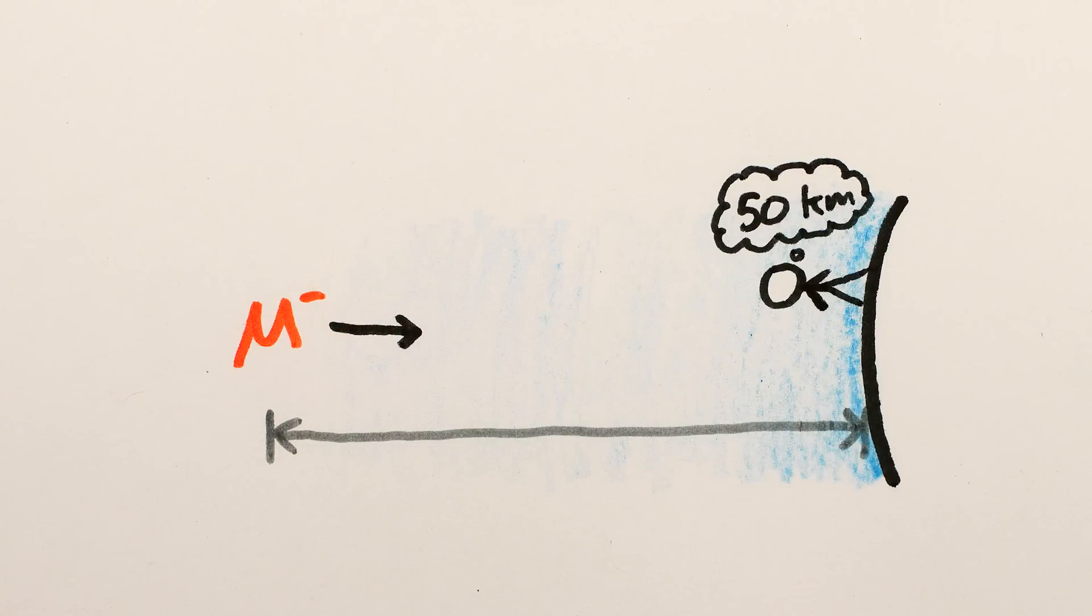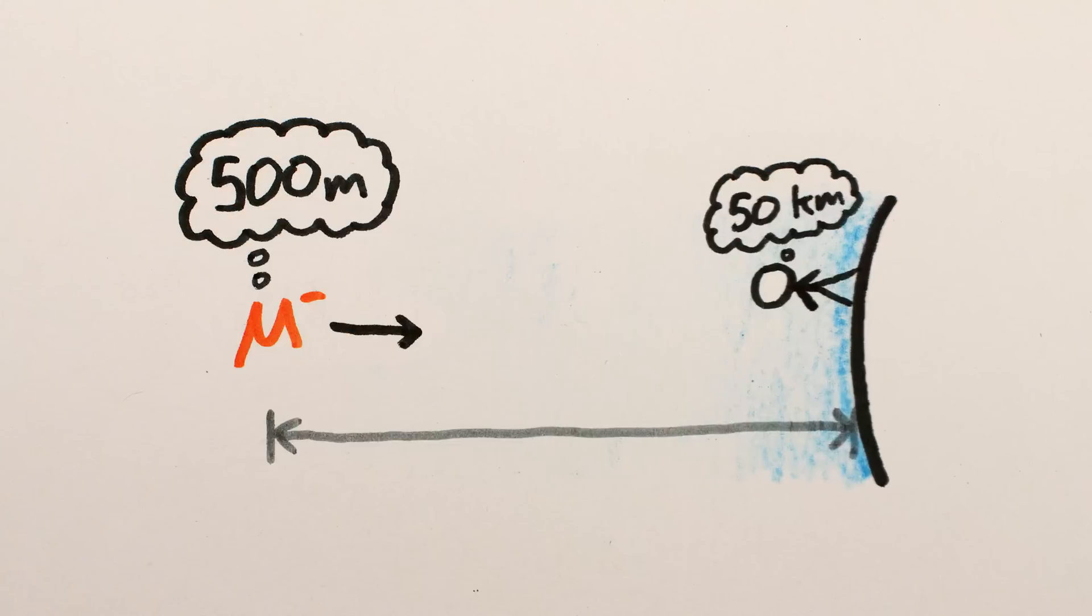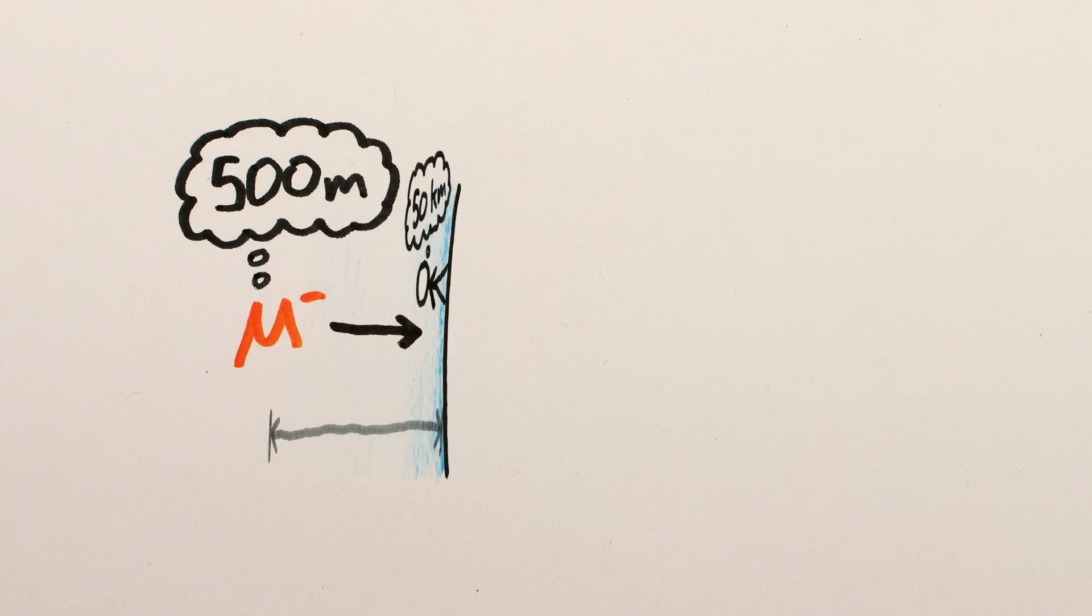In this case, 50 kilometers of our atmosphere is, to the muon, literally only half a kilometer, which is thin enough for even a muon with a lifetime of 2.2 microseconds to traverse.